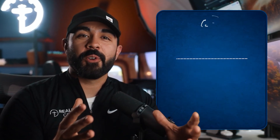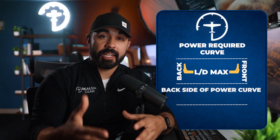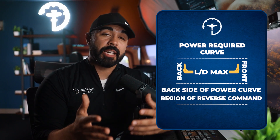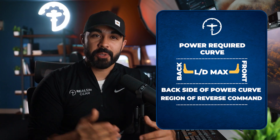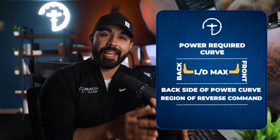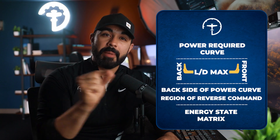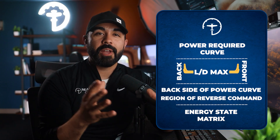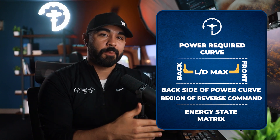In this video, you learned about the power required curve, the LD max which splits the front and back side of the power curve, and the backside being the region of reverse command — where it takes more power to fly slower because of induced drag — which ultimately helps us control the airplane using pitch for airspeed and power for altitude. You also learned about the energy state matrix in chapter four of the Airplane Flying Handbook, which shows a more energy-centered approach to landings rather than the binary pitch for airspeed and power for altitude.